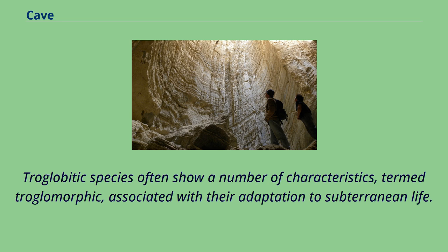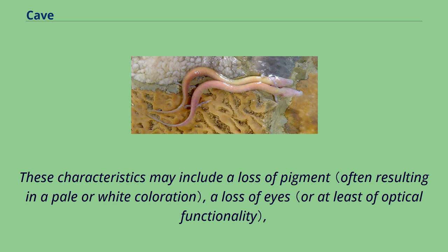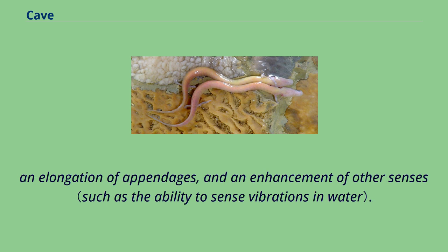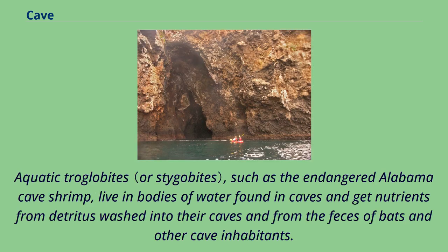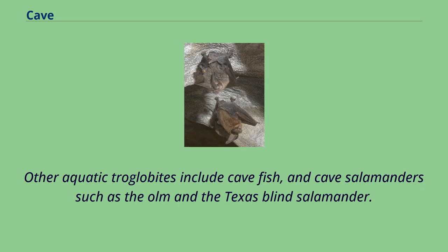These characteristics may include a loss of pigment, a loss of eyes, an elongation of appendages, and an enhancement of other senses. Aquatic troglobites, such as the endangered Alabama cave shrimp, live in bodies of water found in caves and get nutrients from detritus washed into their caves and from the feces of bats and other cave inhabitants. Other aquatic troglobites include cave fish and cave salamanders such as the Olm and the Texas Blind Salamander.